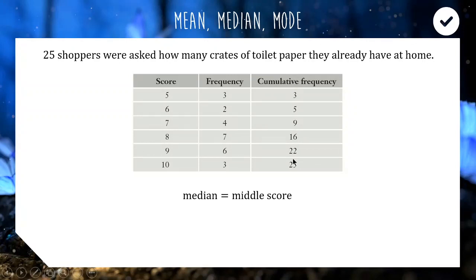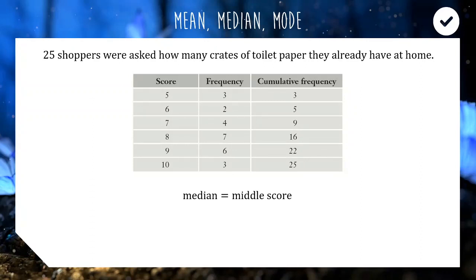The last cumulative frequency number is 25, which is how many shoppers there are. Because 25 is an odd number, if you take out the 13th score you'll get 12 on the left and 12 on the right. So the 13th score is going to be our median. A simple trick: take the total, add one, and divide by two. So 25 plus one is 26, divided by two is 13 — we're looking for the 13th score.